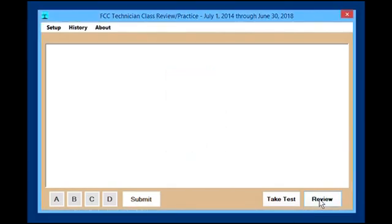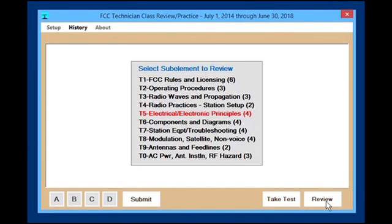You have a choice of reviewing the elements of the technician class or taking a test. If you review the elements, you will see all ten of the different sub-elements that you are able to review. You click on the one that you want to review.